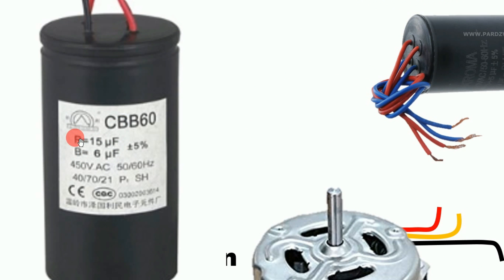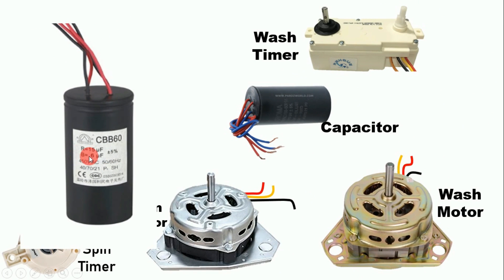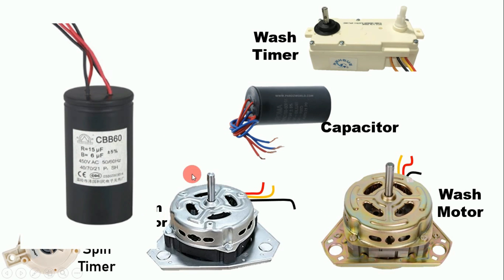On the capacitor, R is written for 15 microfarad and B for 6 microfarad — meaning the red wire is for the 15 µF capacitor and the black wire is for the 6 µF capacitor. The capacitor with higher capacitance (15 µF) is used for the wash motor, and the one with lower capacitance (6 µF) is used for the spin motor.